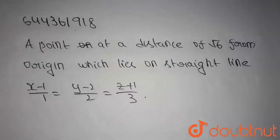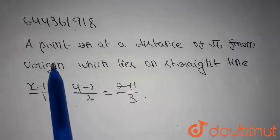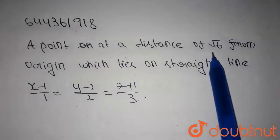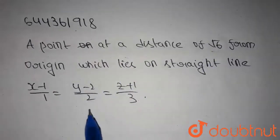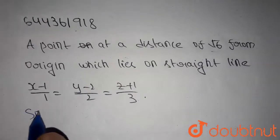Hello guys, this is our today's question. We have to find a point at a distance of root 6 units from origin which lies on the given straight line. Let's get into the solution.